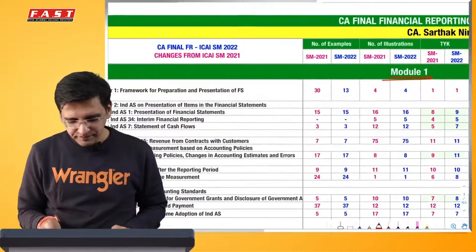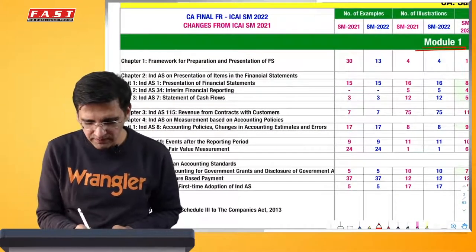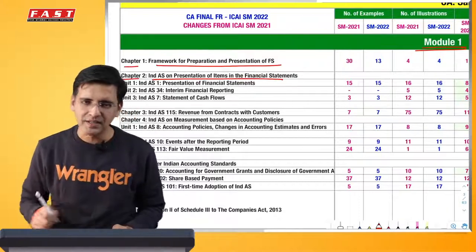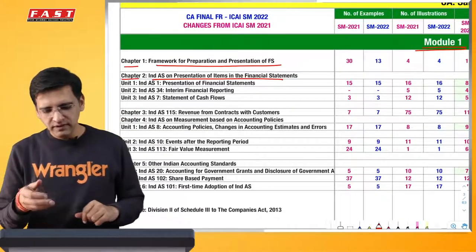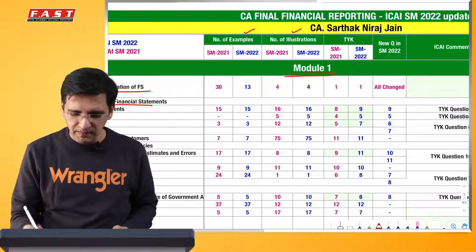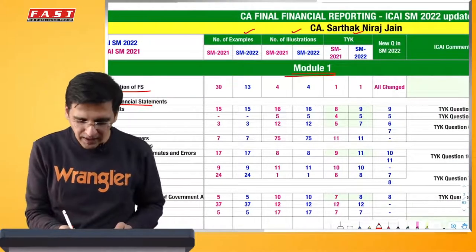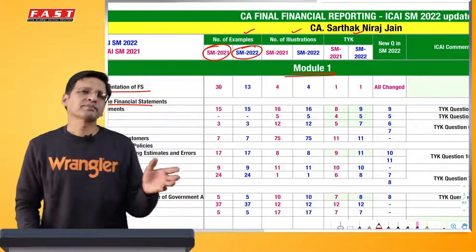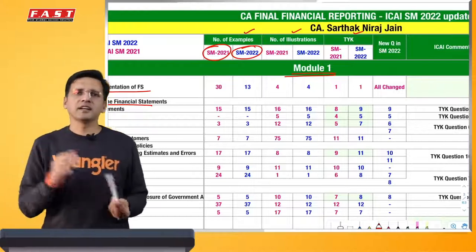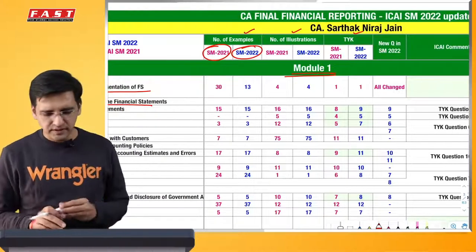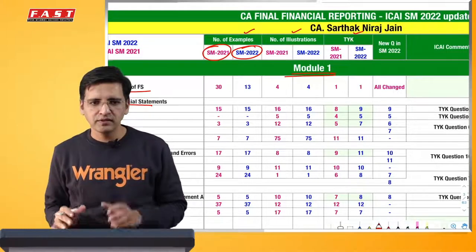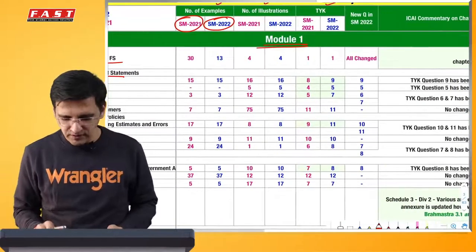Module 1 mein kya-kya changes hue hain - to what we have done is: Chapter 1 - Framework for Preparation of Financial Statements, Chapter 2, and so on - these are all your different chapters which are there in this particular module. Sabse pehle humne comparison diya hai ki ismein kitne examples, kitne illustrations aur kitne Test Your Knowledge questions pehle the aur ab hain. Kyunki majority students module ko saare question answers ke liye refer karte hain, content ke liye nahi karte. Question answers is something - definitely kuch add hua hai, to hum us pe focus karna chahenge. That is why we first created a comparison on this.